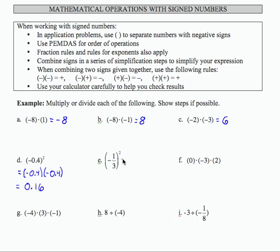In E, I have negative 1 third squared, which means I need to multiply negative 1 third times negative 1 third. The result is going to be positive, so I would multiply 1 times 1 and divide that by 3 times 3, and I get 1 over 9. Since we didn't have any instruction about leaving fractions as decimals to a certain place value, I'm just going to leave this as 1 ninth.